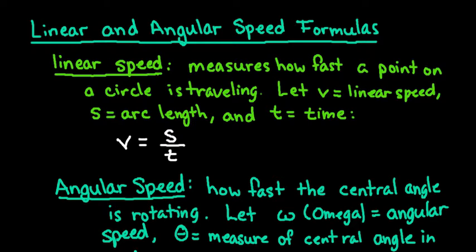A lot of times in trigonometry, we want to know how fast a point on a circular object is rotating or turning, or we also want to know how fast the central angle is spinning. So these formulas are used for that purpose. The first formula that I want to discuss with you is the linear speed.